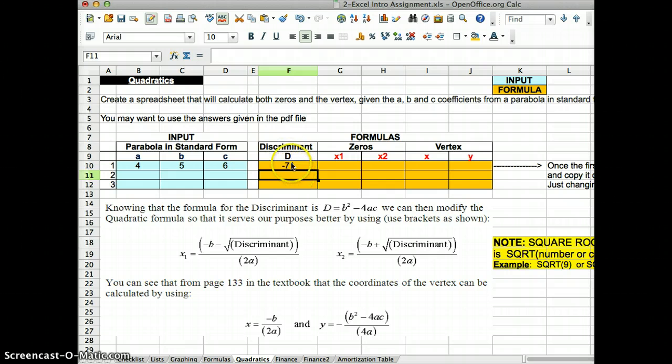That means that it's not going to have any zeros because it's negative. So let me change this to minus 6. So now I have discriminant at 121, and I will get two zeros.